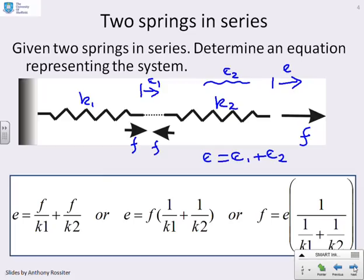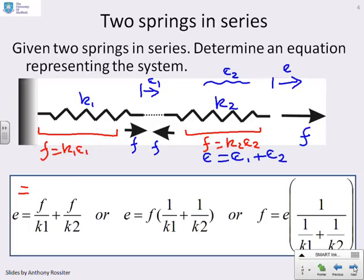Now what I can do is use the information on this annotated diagram to decide what's going on. First of all, let's decide what e1 is. Well, if I look at this first spring here, then what I've got is f equals k1e1, and if I look at this second spring here, I've got f equals k2e2. So if I go back and now write my extensions again, I've got e equals e1 plus e2, and you can see that e1 is f over k1, e2 is f over k2. So this is my model for springs in series: e, the overall extension, is f over k1 plus f over k2.